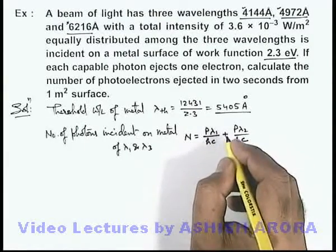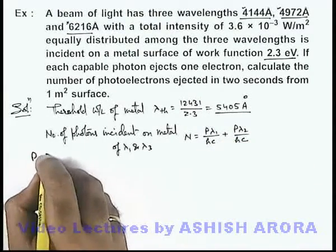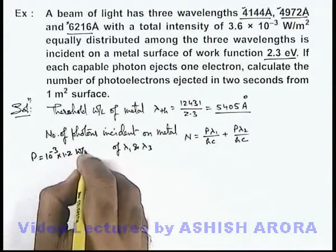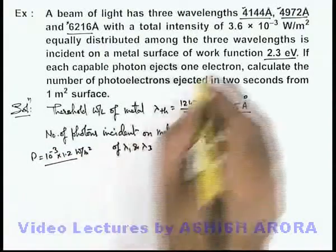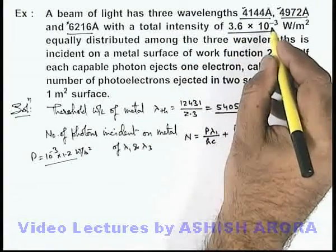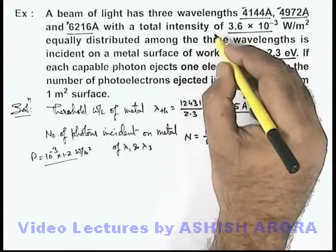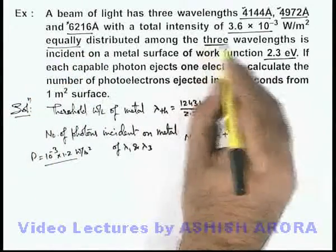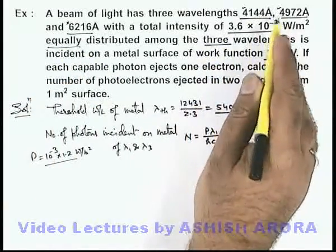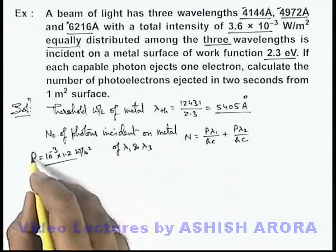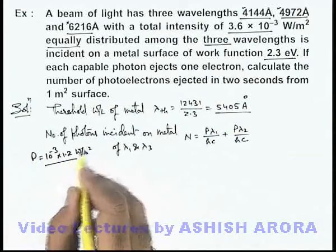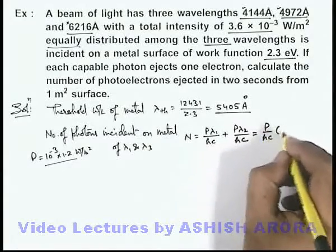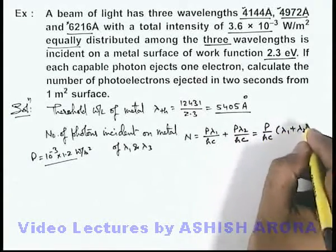Here, power we can directly take as 1.2 × 10⁻³ W/m², because 3.6 × 10⁻³ is the total intensity equally distributed among the three wavelengths. So for these two individually, we can take power as 1.2 × 10⁻³ W/m². This is (P/hc)(λ₁ + λ₂).